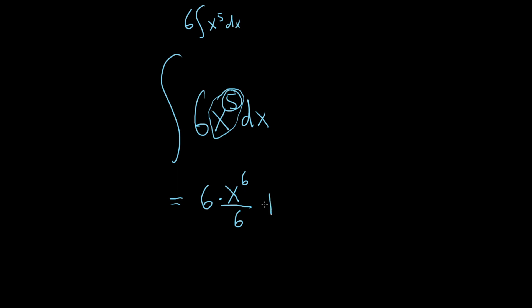Let's not forget the plus C. So again, just add 1 to it and divide. And notice this is really nice because now the 6s will cancel. So we end up with x to the 6 plus our constant of integration.